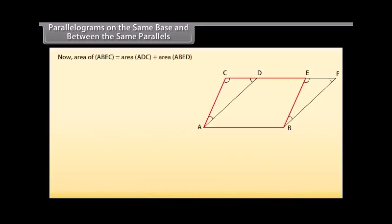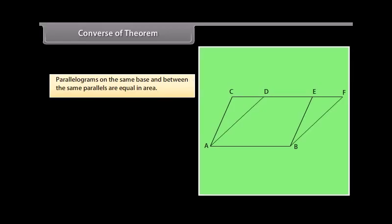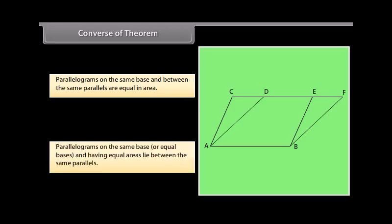Now, area of A-B-E-C equals area of A-D-C plus area of A-B-E-D. Since A-D-C equals B-E-F, we can write: area of A-B-E-C equals area of B-E-F plus area of E-D-A-B from 5, which equals area of A-B-F-D. So, parallelograms A-B-E-C and A-B-F-D are equal in area. Hence, we have proved that parallelograms on the same base and between the same parallels are equal in area. The converse of this theorem is also true, which says that parallelograms on the same base or equal bases and having equal areas lie between the same parallels.